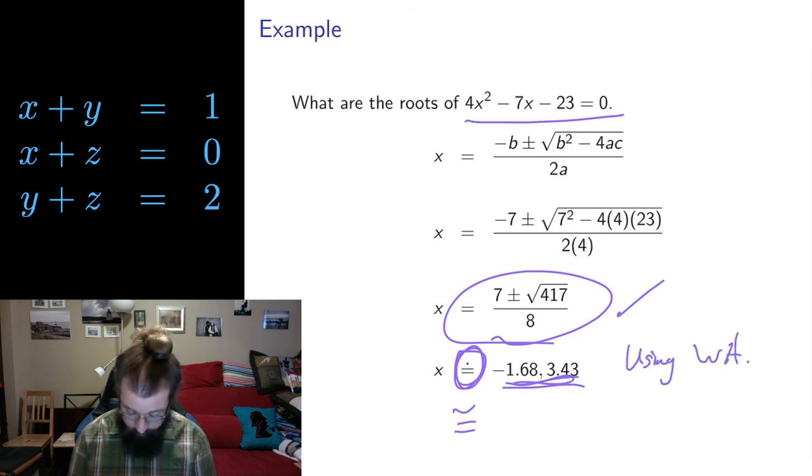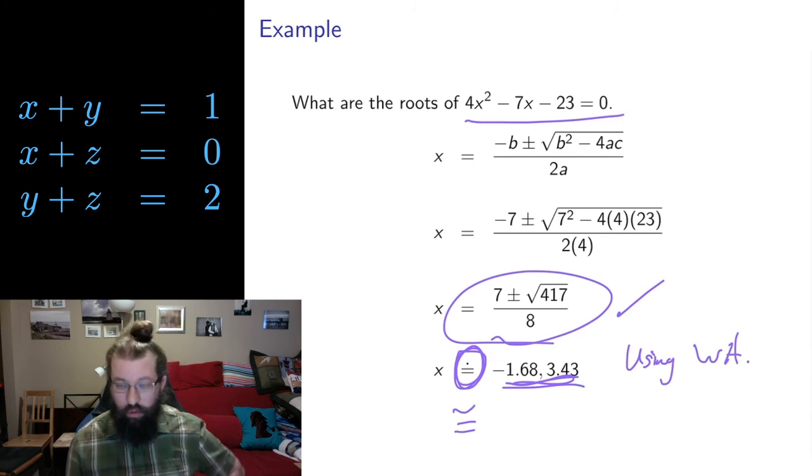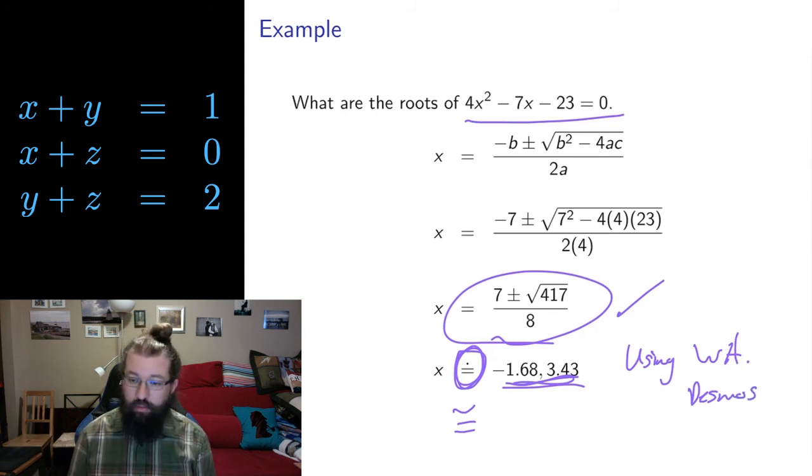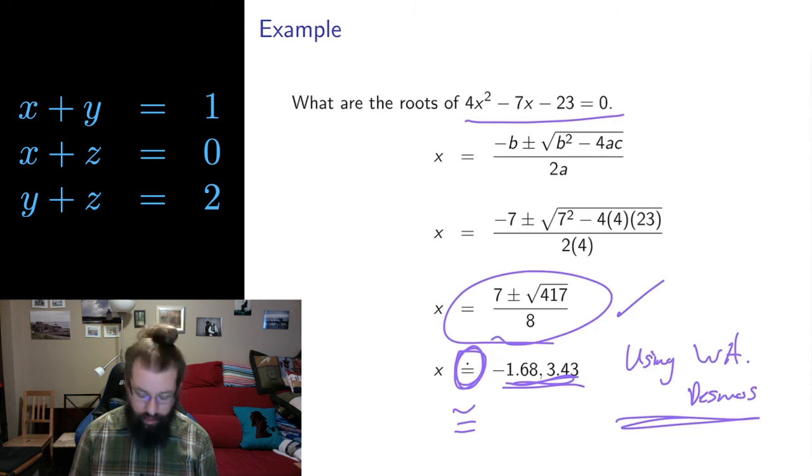So using Wolfram Alpha, for example. W-A being a reasonable abbreviation for Wolfram Alpha. Or using Desmos or whatever calculation tool you happen to use for this. Tell me where you've got these approximate values from. So writing something like this when you have approximate values. Very, very nice. Very good practice in your assignments.